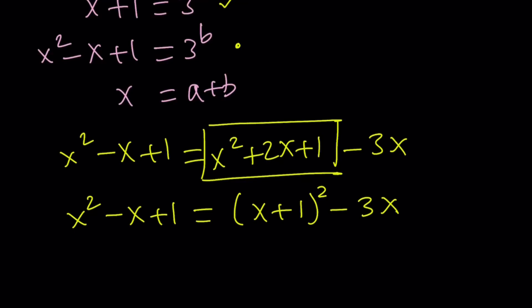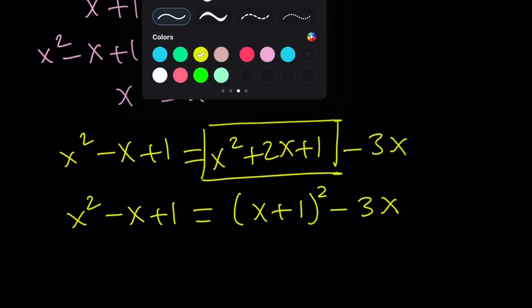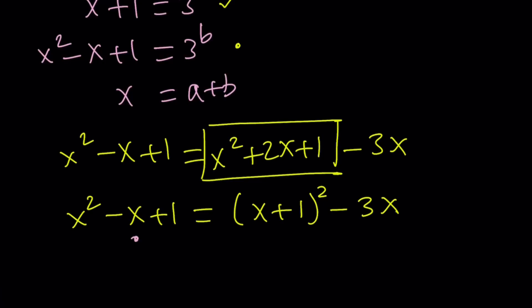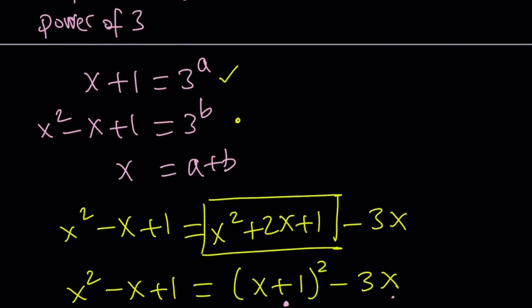So, x squared minus x plus 1 can be written as x plus 1 squared minus 3x. Now, here's what it means. I have an expression for this. I have an expression for that. I have an expression for this in terms of a and b, and this one in terms of a and b. But I don't have anything for x. Well, actually, we do. Look at this. If you subtract 1 from both sides, you get an expression for x.